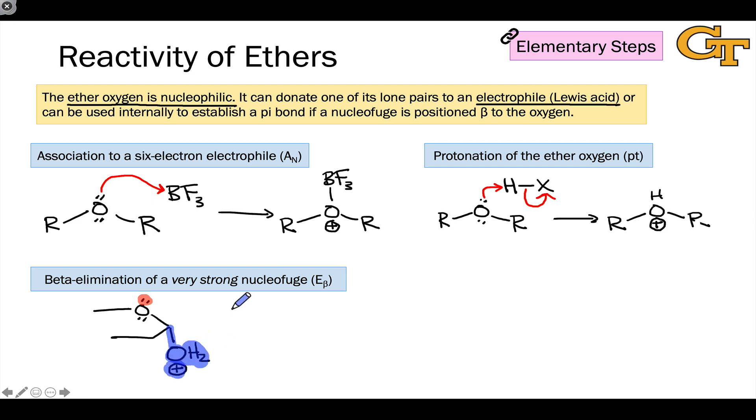We have the structural prerequisites of beta elimination then, and beta elimination in this case forms a new carbon-oxygen pi bond and kicks off water as a leaving group or nucleofuge.